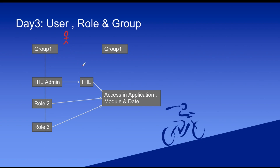What ServiceNow suggests instead is to create a group and add that group to a particular role. So we will create a group, add a particular role inside the group, and one role can have multiple child roles. For example, ITIL admin is the admin role and it can have a child role called ITIL. We'll add this group to a user.